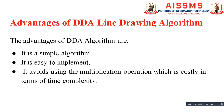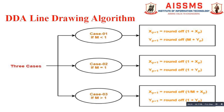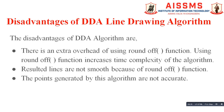Now let us see some of the disadvantages of the DDA line drawing algorithm. First, there is an extra overhead of using the round-off function, which increases the time required for execution and thus increases the time complexity of the algorithm. Second, the resulting lines are not smooth because of the round-off function — it plots rounded-off values rather than absolute values. Third, the points generated by this algorithm are not accurate.